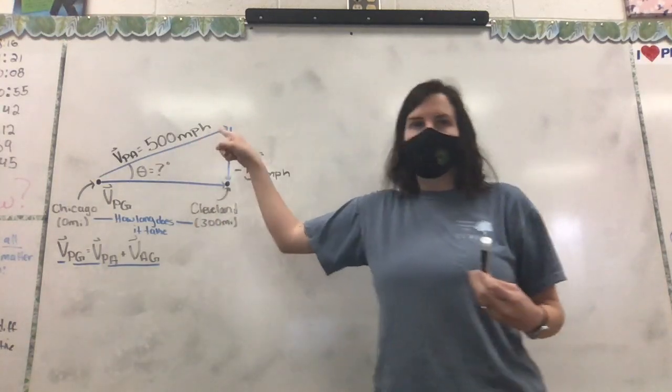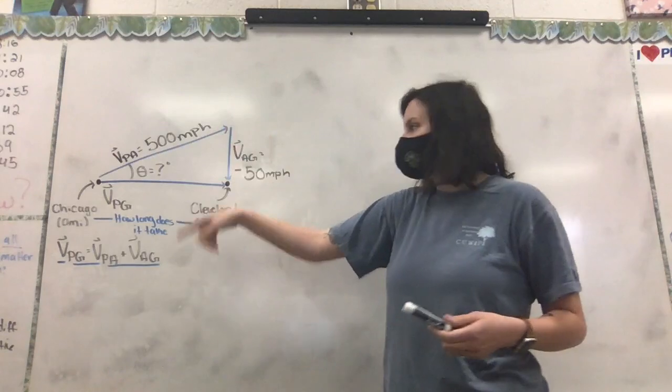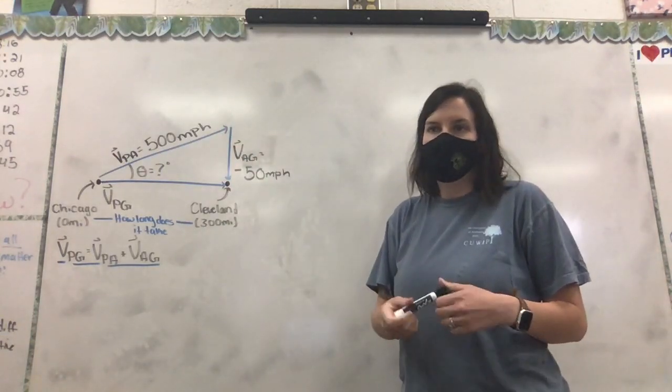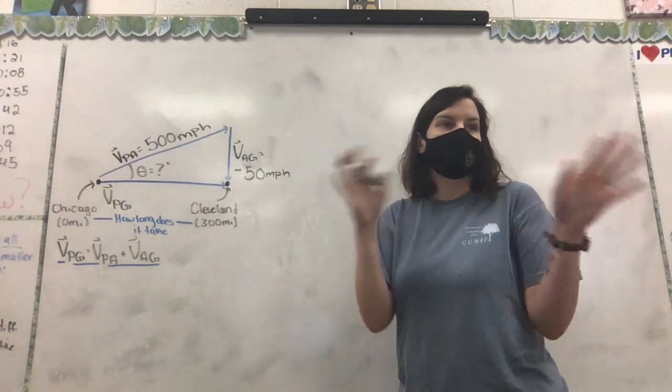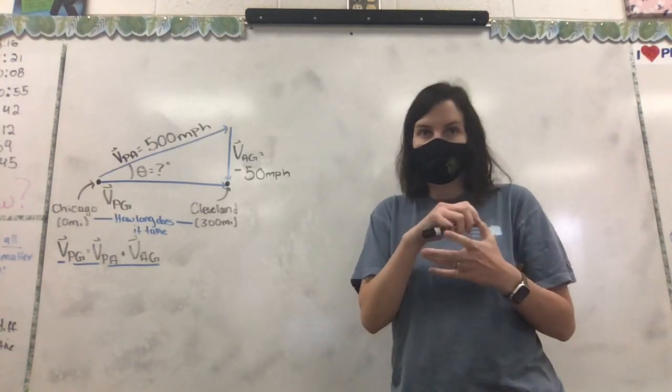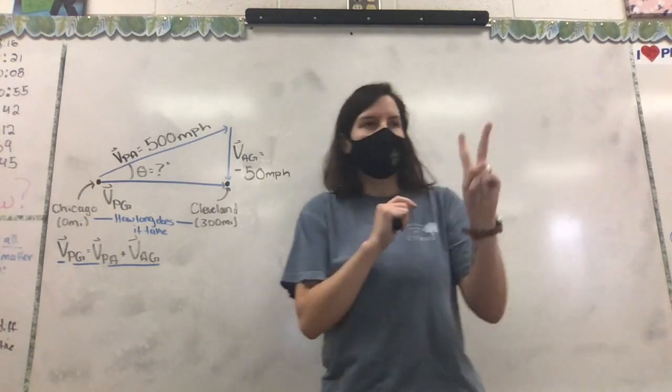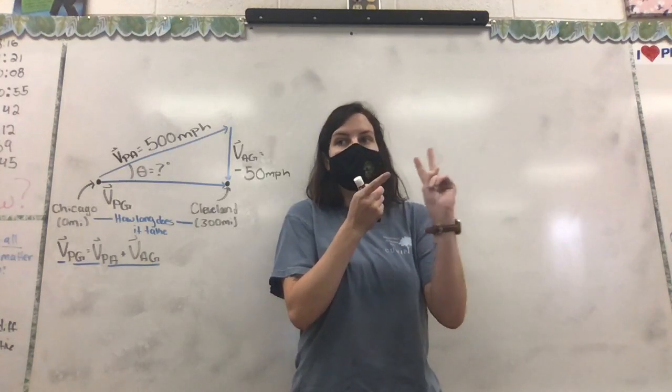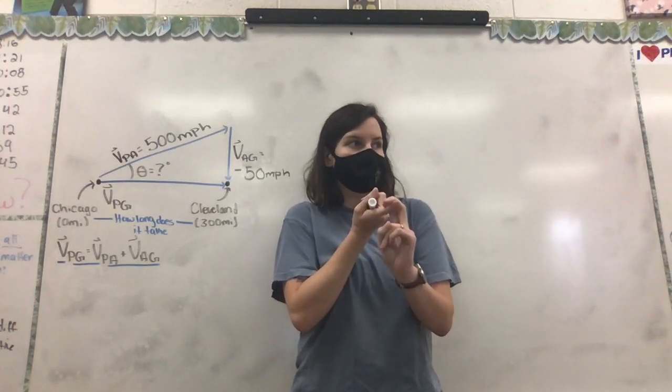We know we want to go 500 miles per hour while we're flying, and we know that the wind is pushing down on us by negative 50 miles per hour. We're just going to keep everything at miles per hour for this. Now the two things we need to find are the theta and how long it takes us to fly to Cleveland.